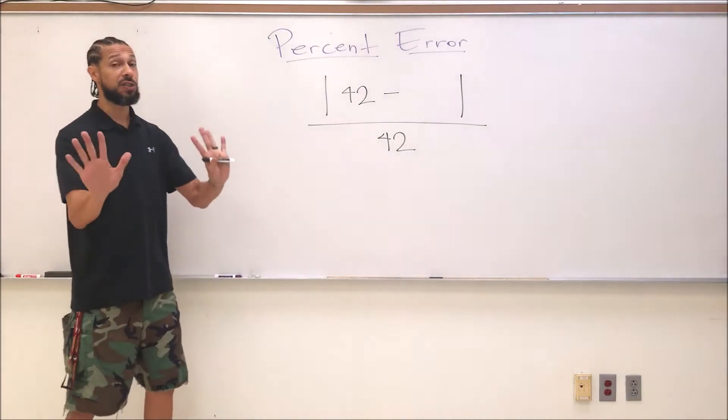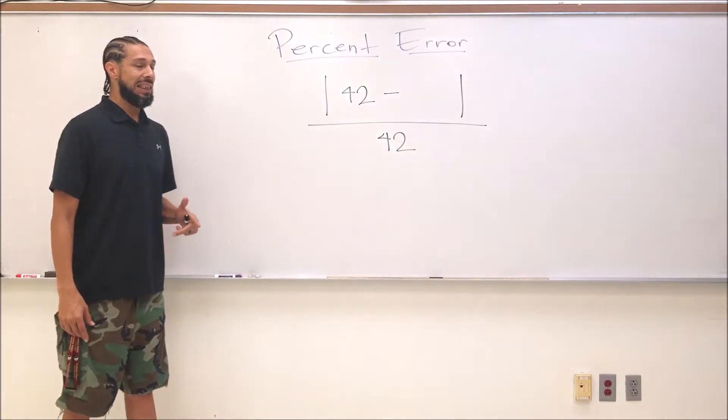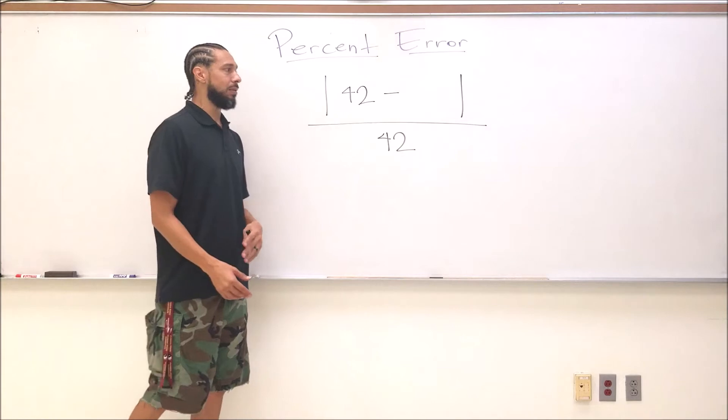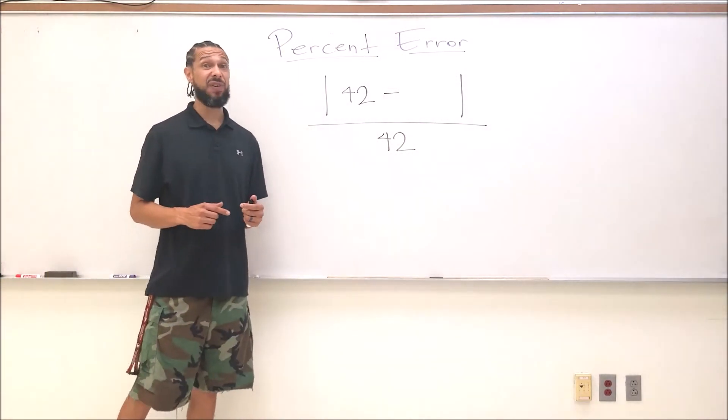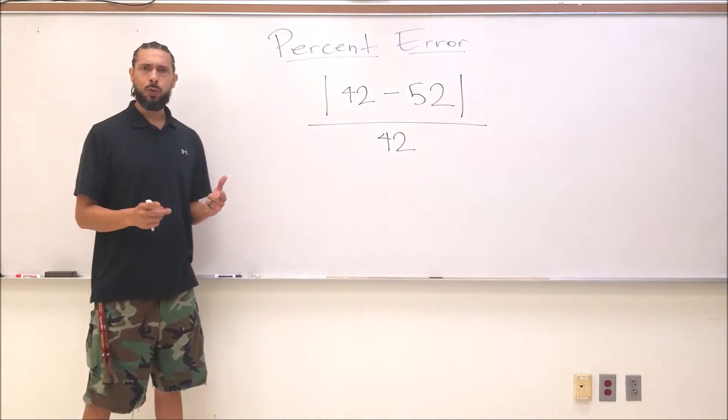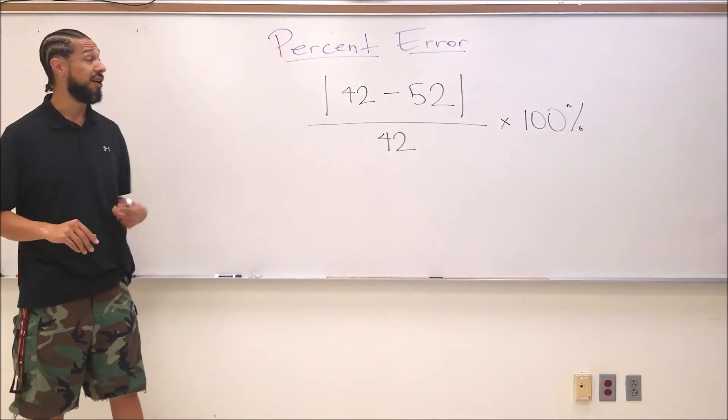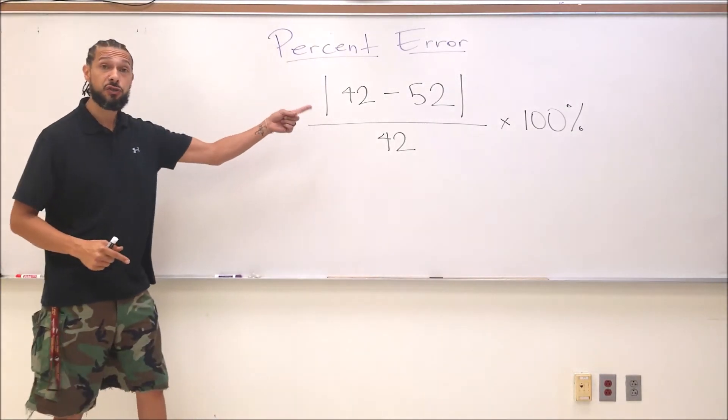For the first example, remember I guessed 32 but she was actually 42. Let's say I made a serious boo-boo and I estimated her age at 52. Don't ever do that, okay? I was 10 years off before, I'm 10 years off now. I was 10 years under before, I'm 10 years over now.